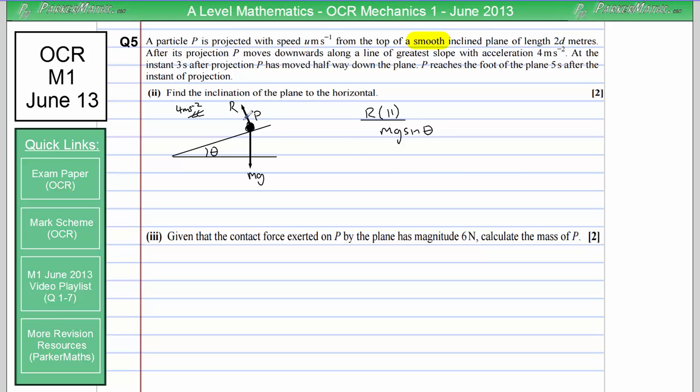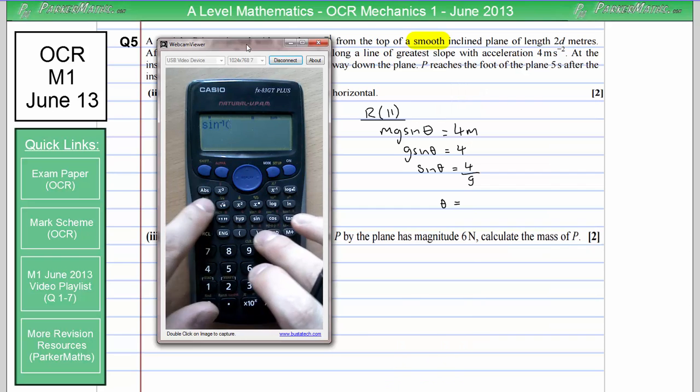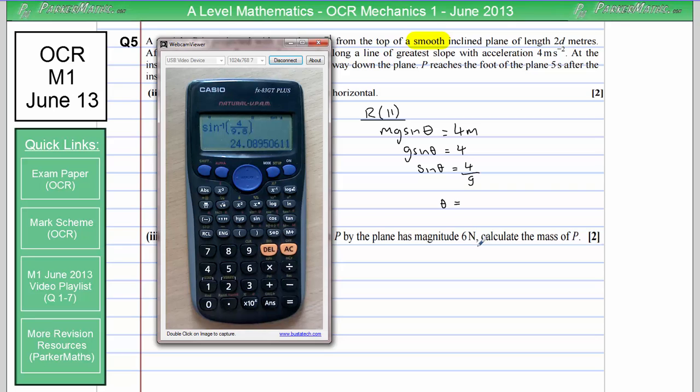The normal contact force is perpendicular to that so we don't need to include that here so that's our only force that has any component down the slope. So that's going to equal mass times acceleration and we know acceleration is 4 so that becomes 4 lots of m. Notice how both sides have an m so we can cancel that out to get g sin theta equals 4 and sin theta is 4 over g. So to find theta all we need to do is inverse sin of 4 over g. And that gives us 24.1 to 3 significant figures.